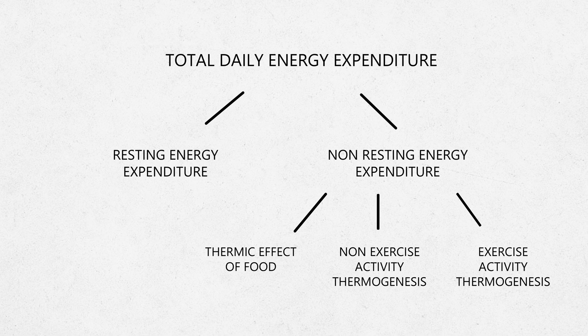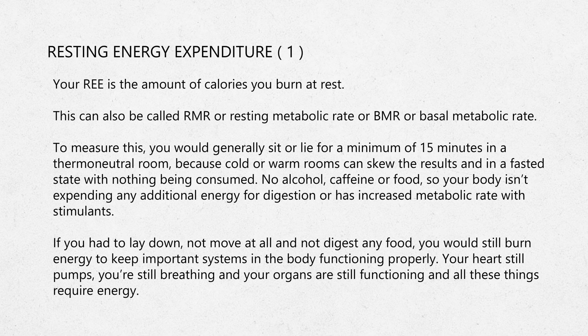So those are the six components of your metabolism. Out of those six, we'll only focus on four of them: resting energy expenditure, thermic effect of food, non-exercise activity thermogenesis, and exercise activity thermogenesis. Now, your resting energy expenditure — or REE — can also be called your RMR (resting metabolic rate) or BMR (basal metabolic rate).